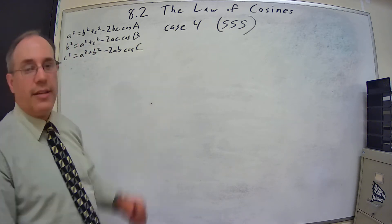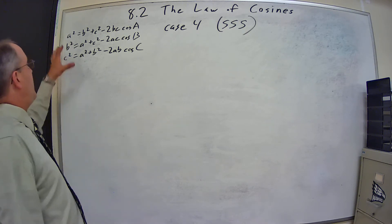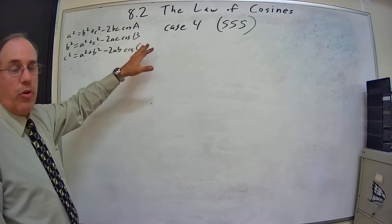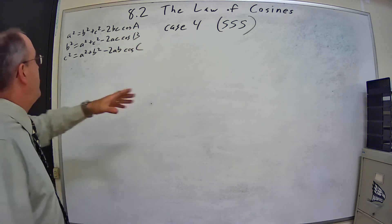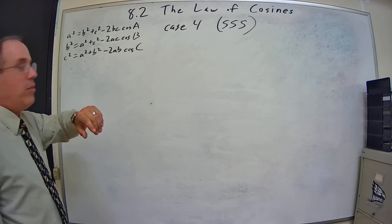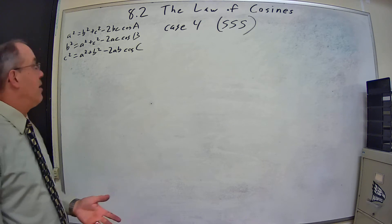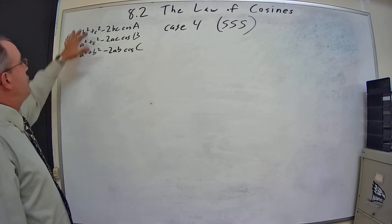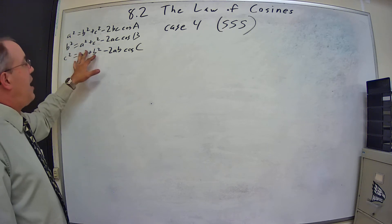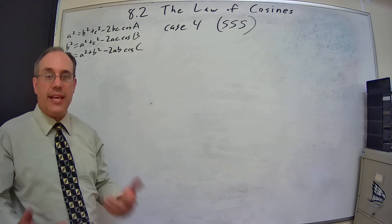So let's just jump right into this. The only real difference with how we do this is we're going to have to solve into this equation a little more. Whereas with side angle side, we just chose the one that used the correct sides and angle and it pretty much gave us the missing side. With this, we're going to have to choose which equation we want to use, plug in all the sides and solve that equation to get the desired angle.